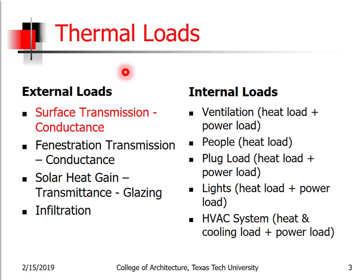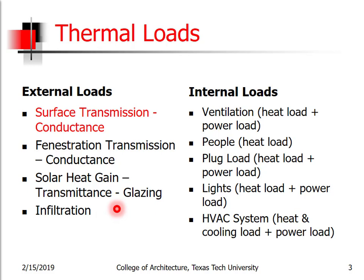We're going to look at what we call the thermal loads — heat gain and heat loss on a building. These are the basic loads on a building, starting with surface transmission: the transmitting of heat through surfaces such as walls, floors, and ceilings or roofs. Then through fenestrations, which are glass — the conductance and transmission through glass, and heat gain through light passing through the glass and turning into heat. Then something called infiltration. Those four make up the external loads of the building. And then there are internal loads: ventilation, people, plug loads, lights, and HVAC — and we'll talk about all of these in detail.